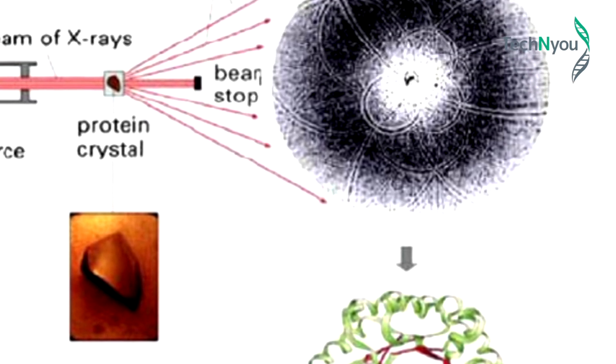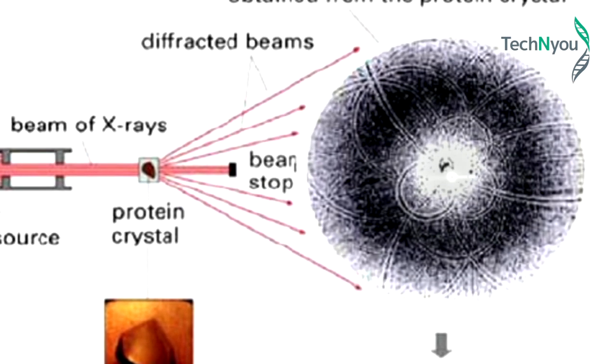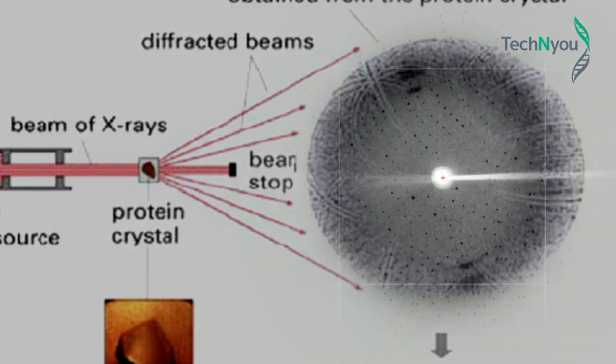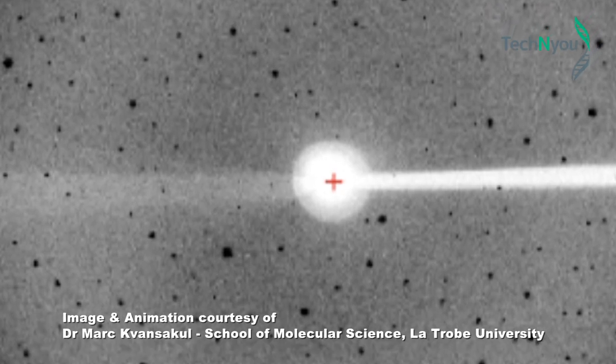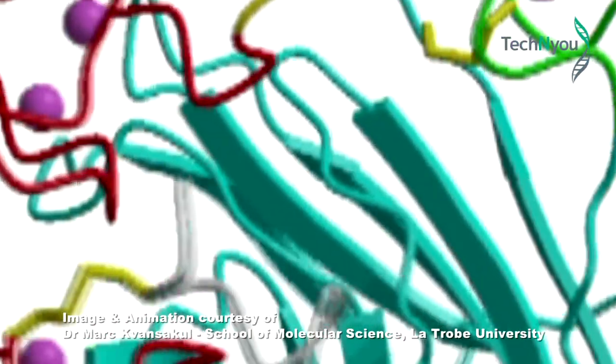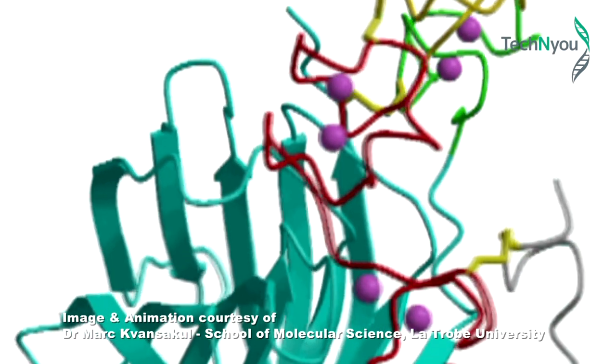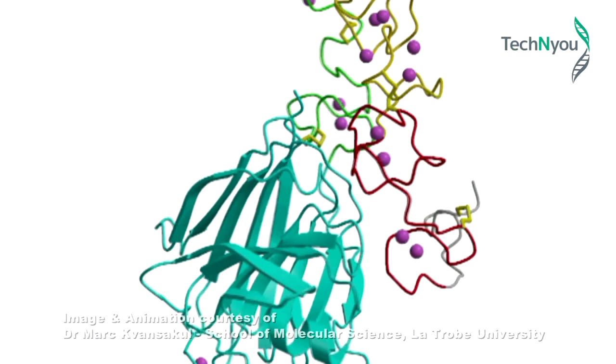A protein sample will deflect or bend an X-ray beam around itself to create a projected diffraction pattern that reveals its inner structure and dimensions. Scientists can then calculate the precise size and characteristics of the protein by measuring its image.